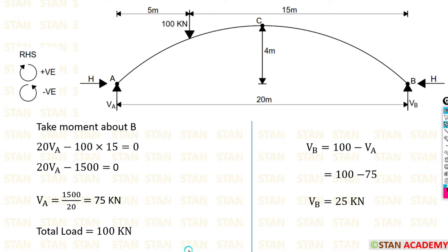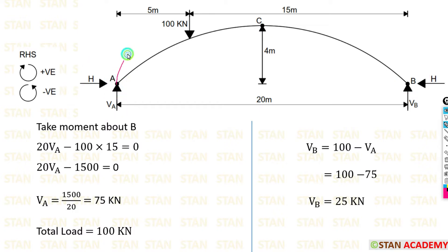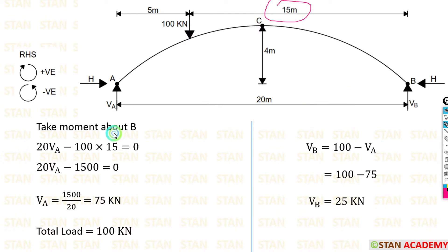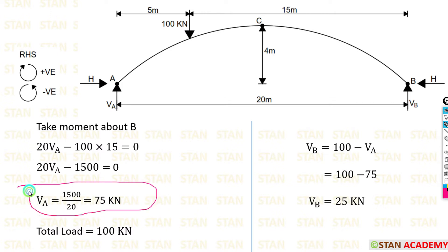Now we are going to find out the vertical reactions in this arch. First I am going to find out the vertical reaction at point A, VA. For that I am going to take moments about B. Clockwise will be positive and anticlockwise will be negative. The vertical reaction VA is acting towards point B in the clockwise direction, so positive, and the distance is 20 meter — so 20·VA. The point load 100 kN is acting towards point B in the anticlockwise direction, so negative, and the distance is 15 meter — so minus 100 into 15. Finally we are getting VA equal to 75 kN.